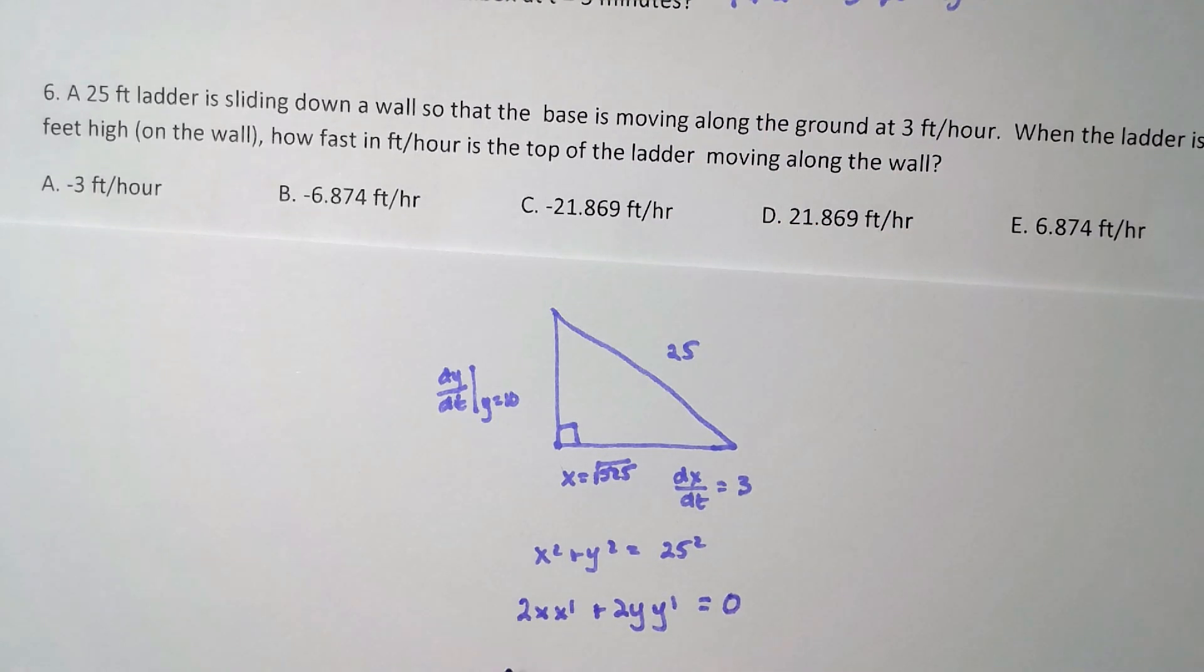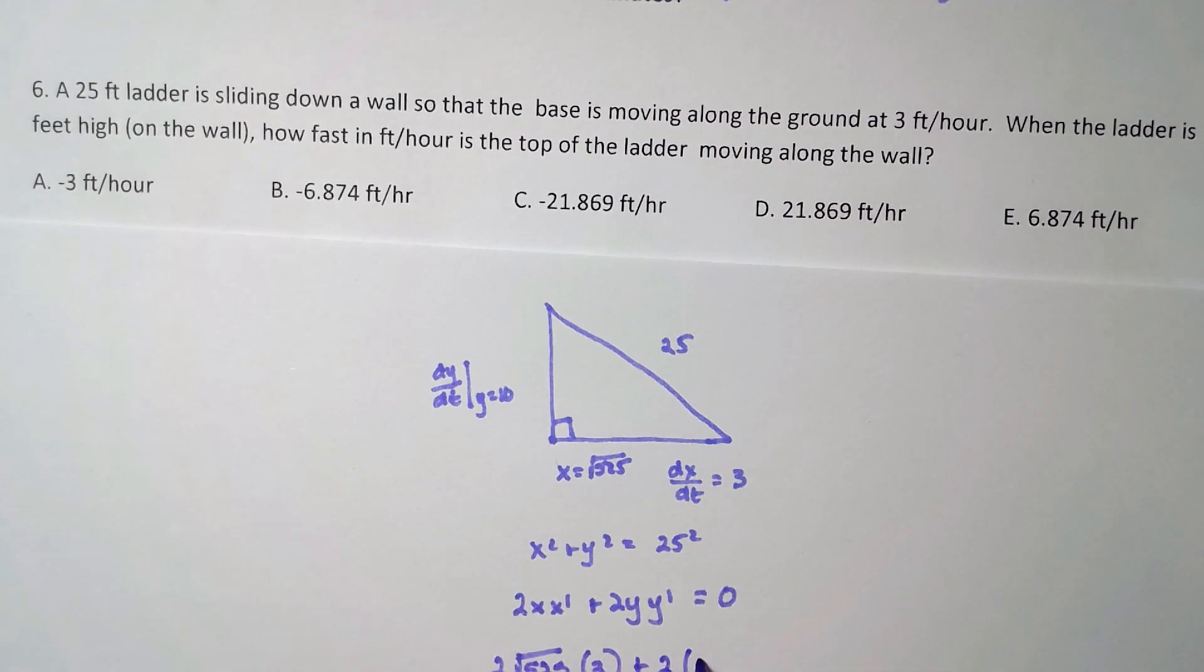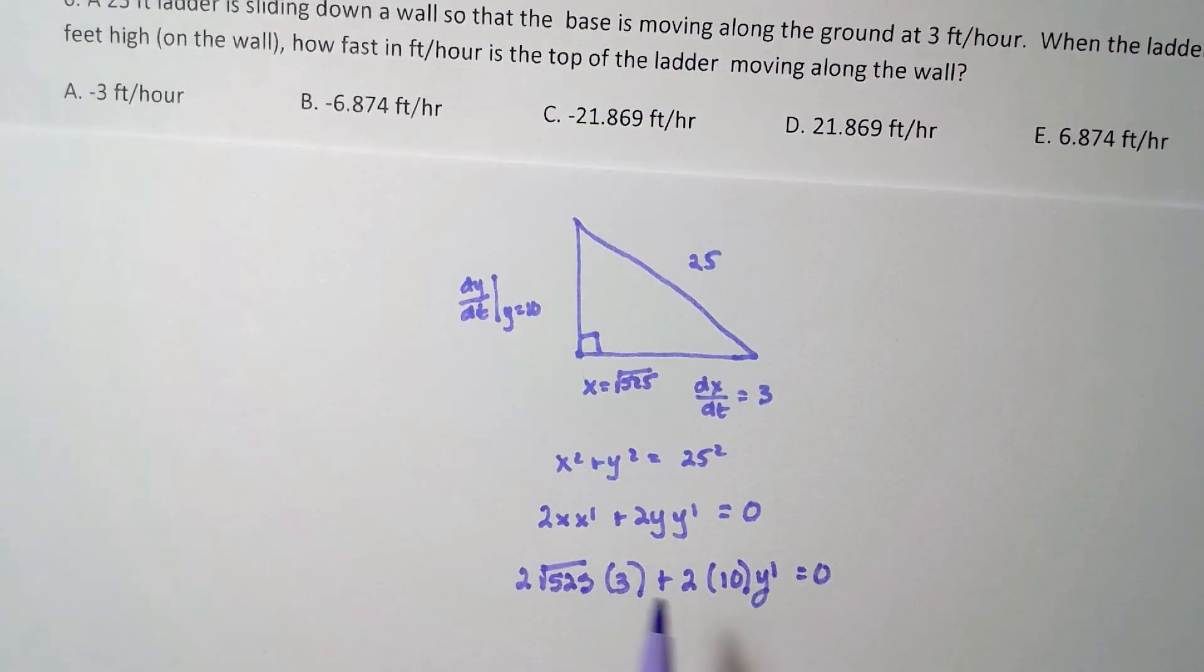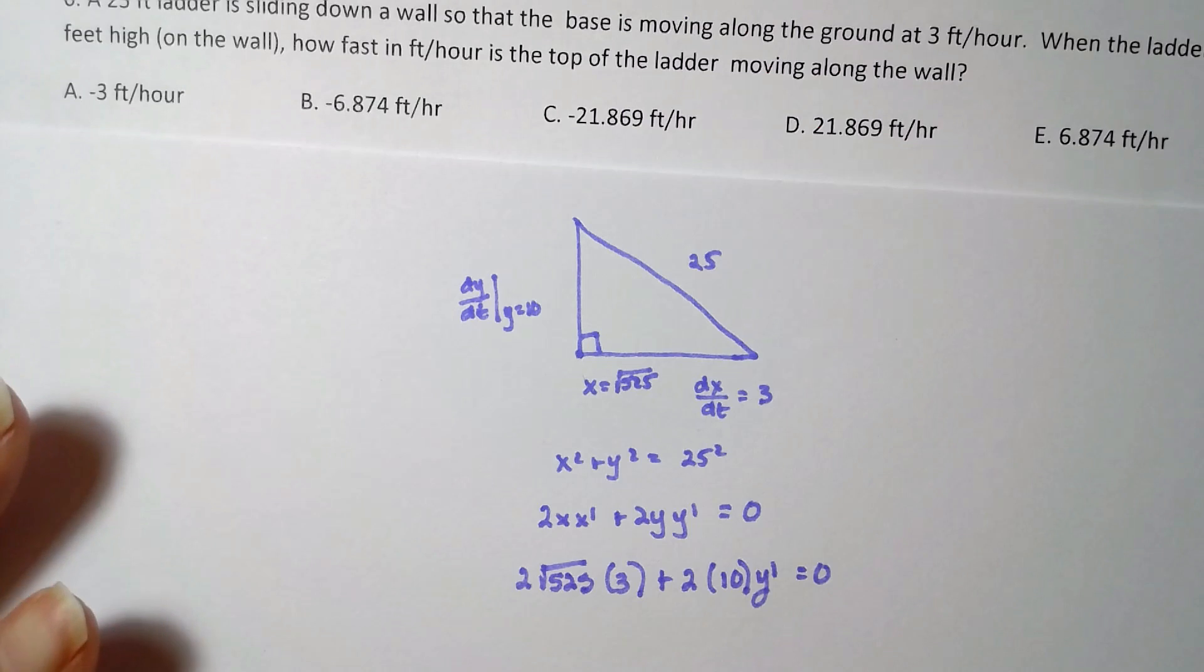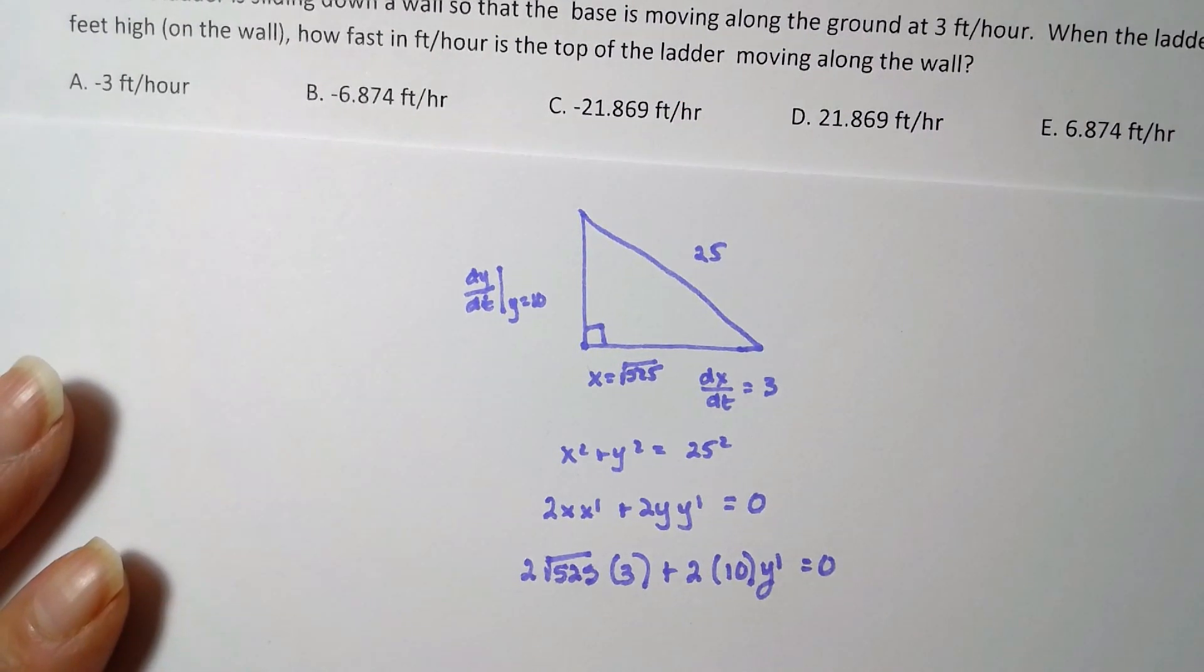Right, and that's 2 times root 525 times x' is 3, plus 2 times when y is 10 times y' is equal to zero. So remember, never plug anything in until after you take the derivative, except for cones. And the only reason why you're doing that in cones is to get rid of a variable. With ladders, we don't need to do that.